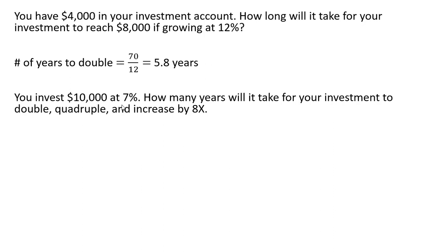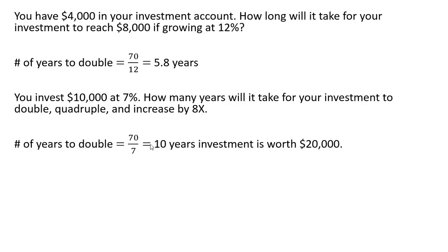You invest $10,000 at 7 percent. How many years will it take for your investment to double, quadruple, and then increase by 8 times? The number of years to double — 70 divided by 7 — will be 10 years. So in 10 years, your investment will be $20,000. For this investment to become $40,000, or to quadruple, it's going to take another 10 years for $20,000 to become $40,000.